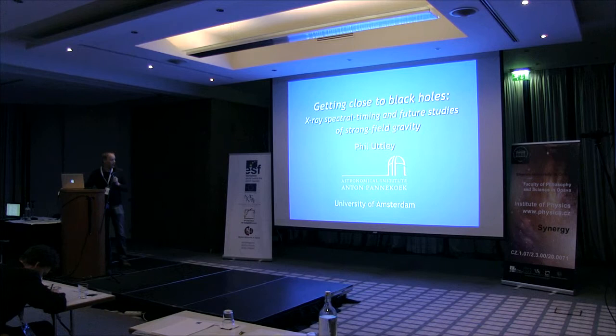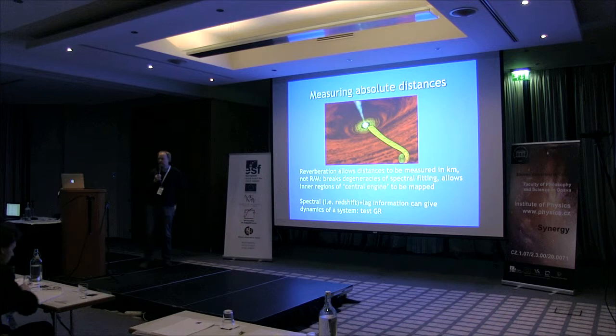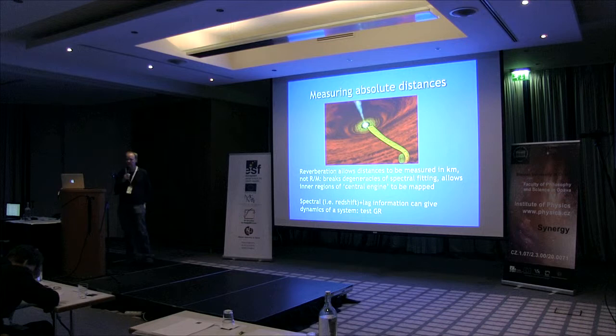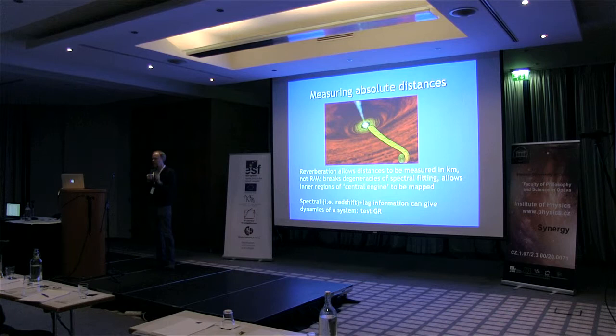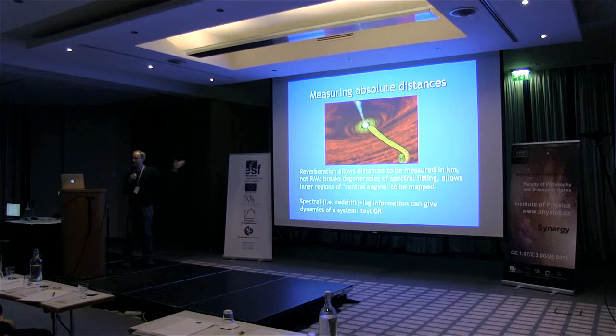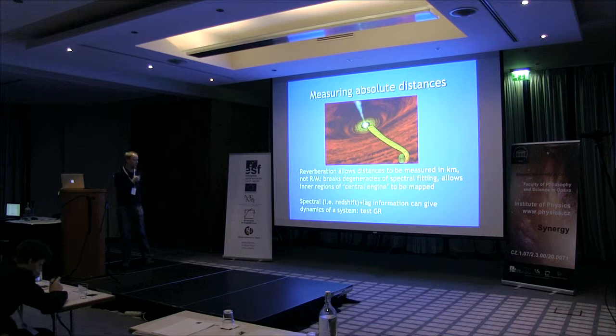One of the reasons we want to do this with lags is that it gives us, for the first time, absolute distances. For the size scales that we're looking at, these are tiny, tiny regions. If you try imaging them on the sky, you're never going to be able to access those size scales with images. The way you essentially make images is by doing reverberation mapping, just like people do with AGN in the optical. By doing that, we get measurements of distances in kilometres, and that breaks a lot of the degeneracies in spectral fitting and allows these inner regions to be mapped.